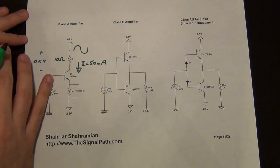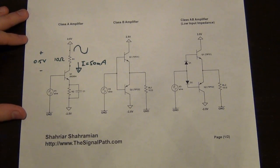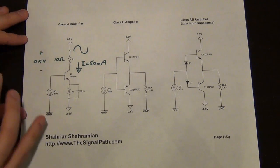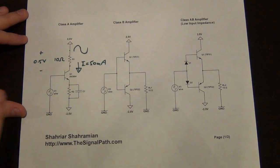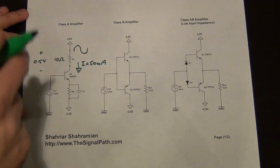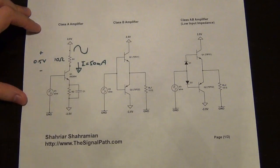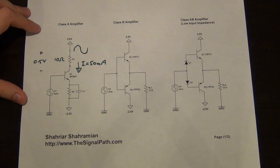The problem is that if there is no signal present, this device is always conducting current — a tail current or bias current of at least 50 milliamps. That current is always there and there is nothing you can do about it, so if there is no signal, that power is wasted. With a plus and minus two-and-a-half volt supply and 50 milliamps, that's a lot of wasted power. The maximum efficiency of the Class A amplifier is just over 20%, and there is nothing you can do to really improve that with a passive resistive load.